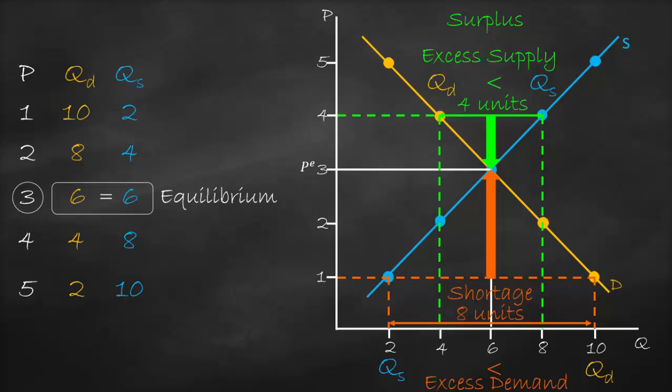This is what we mean by a free market — the market will correct itself by itself. If we have a price above equilibrium, we have a surplus or excess supply, and prices will fall until equilibrium is reached. If we have a price below equilibrium, we have excess demand or a shortage, and prices will rise until equilibrium is reached. That is how the market corrects itself.